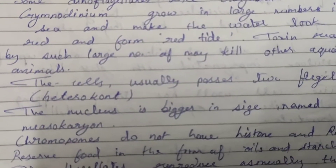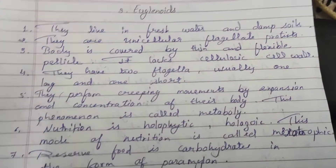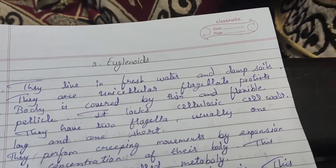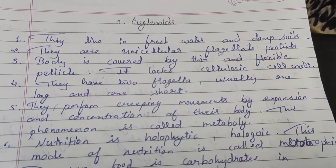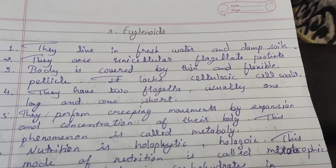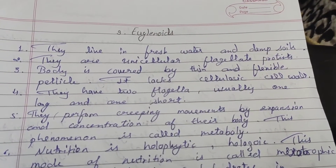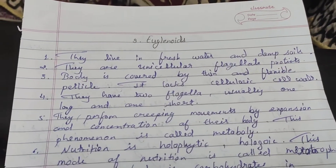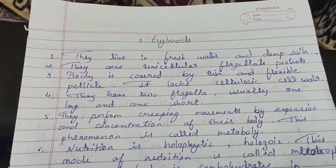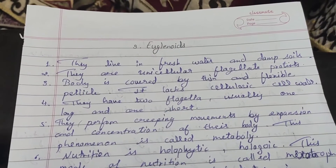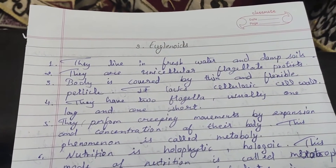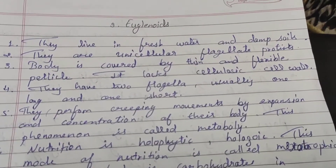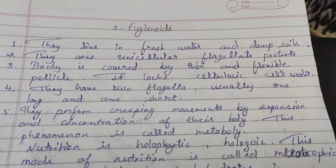Now let me discuss the third group of the protistean algae. We have to talk about the euglenoids, which are found in fresh water and damp soil.